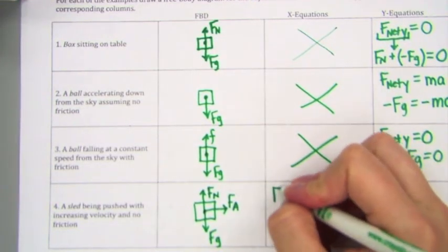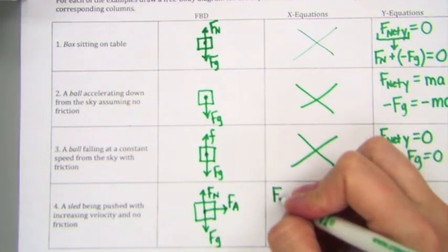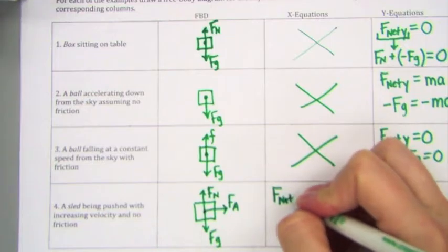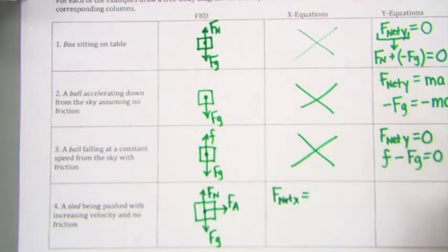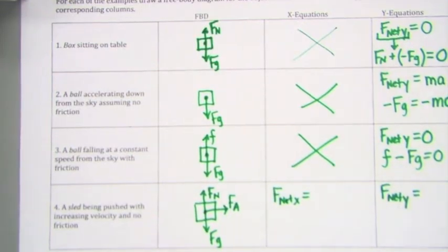In this problem, I have both x and y direction. So I'm going to do an F net x and an F net y. It says it's increasing velocity. So that means it is accelerating. Which direction is it accelerating in? It's accelerating in the direction of motion. In this case, horizontal. So I'm going to set F net x equal to m times a.